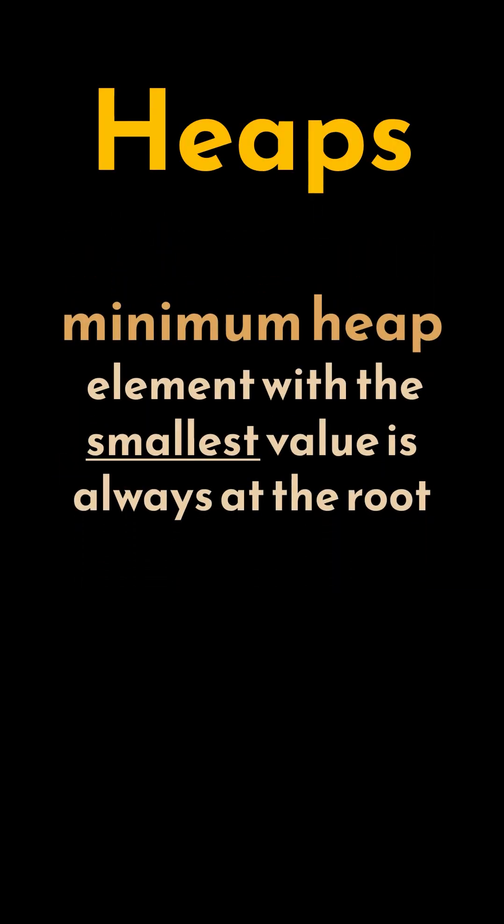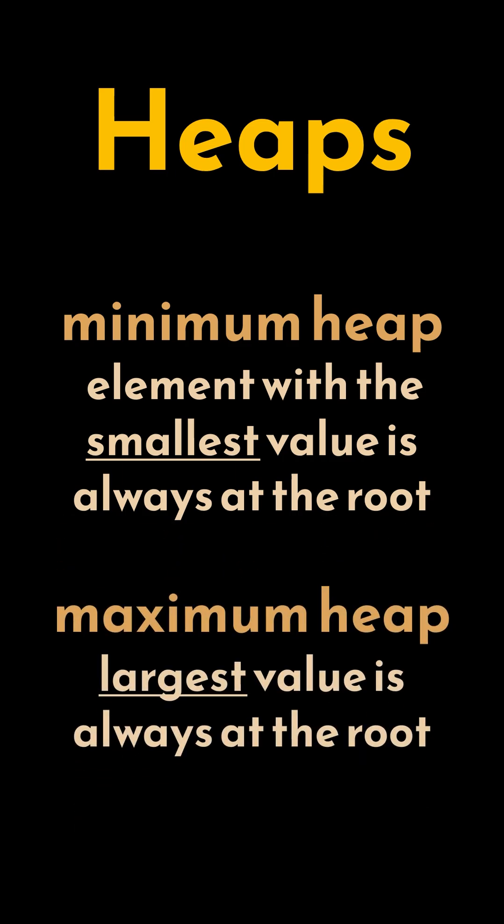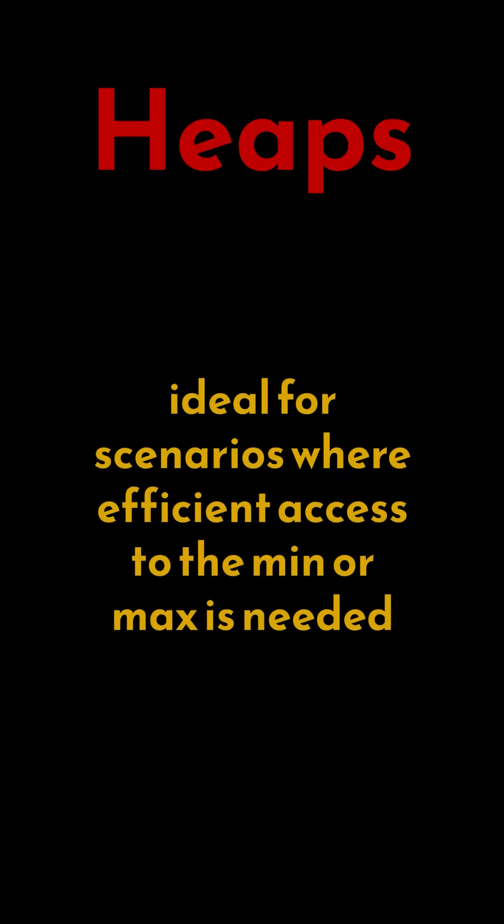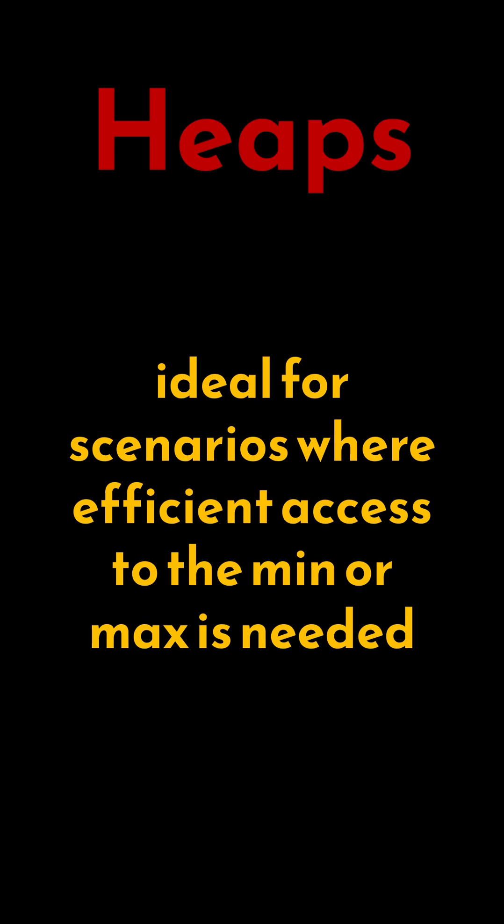In a minimum heap, which is the default implementation for priority queues, the element with the smallest value is always at the root, while in a maximum heap, the largest value is at the root. This makes heaps ideal for scenarios where we need efficient access to the minimum or maximum element, like job scheduling or task management systems.